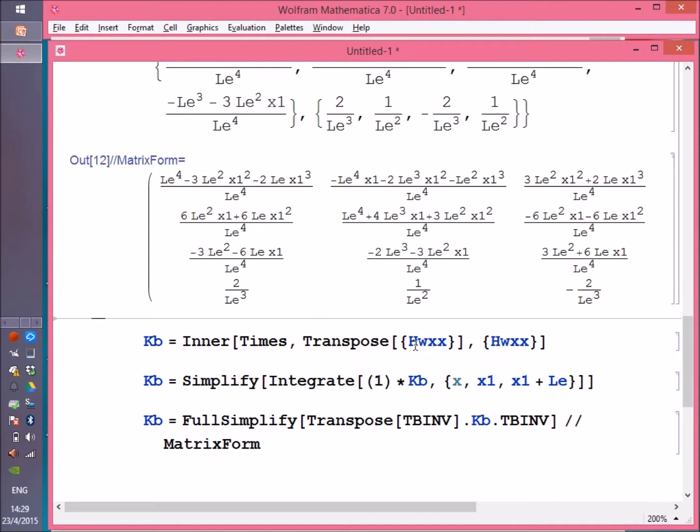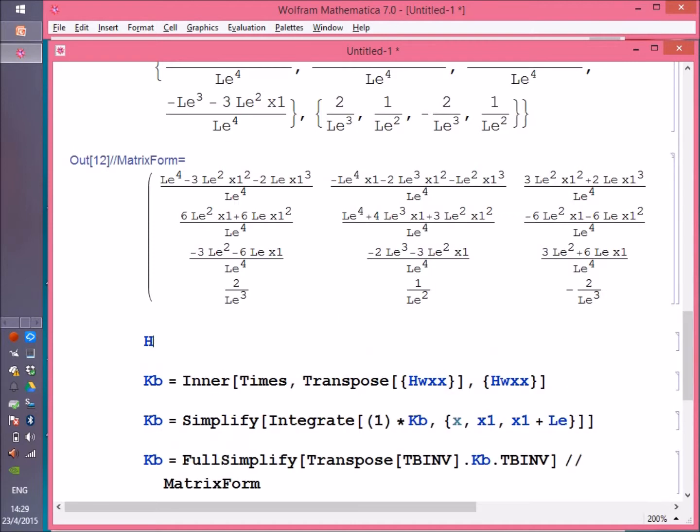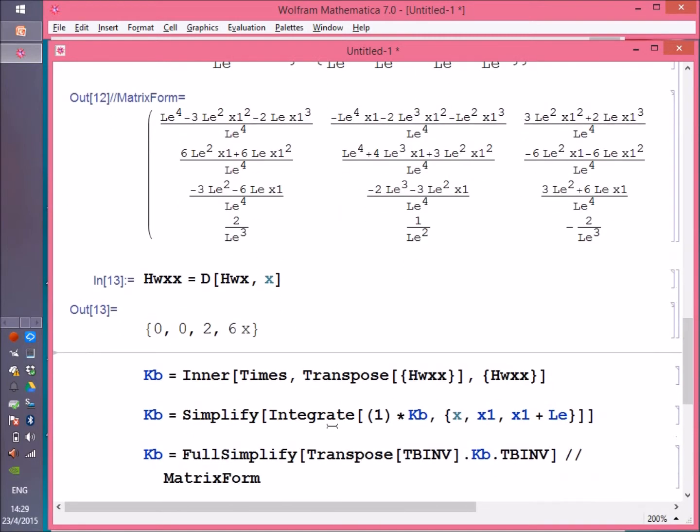Now to get the stiffness matrix, we will need the second derivative of h. So here we define hwxx as the differentiation of hwx with respect to x. And there you are, here is the second derivative.